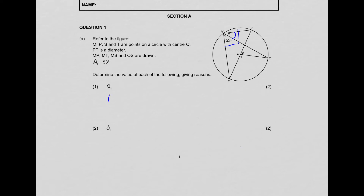Now we know that there's a diameter PT, so that subtends 90 degrees at the circle. So that means that M1 plus M2 is equal to 90 degrees, and your reason is angles in semicircle. Because we know that M1 is 53, that means M2 is equal to 37 degrees.